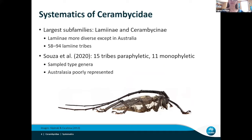There's a debate on how many subfamilies there are, but everyone agrees that the two largest are the Lamiinae and the Cerambycinae. They both have a worldwide distribution, but Australia is interesting in that we're the only place in the world where the Cerambycines are more species-rich than the Lamines, and we're not really sure why. Since they're the largest subfamilies, their tribal classification is in a worse state than the rest.